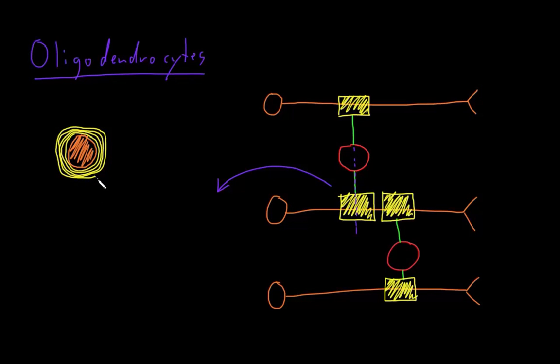And the myelin sheath is still connected by the process to the soma of the oligodendrocyte to maintain it. So each oligodendrocyte process forms one segment of myelin on an axon, and each oligodendrocyte may myelinate multiple axons.